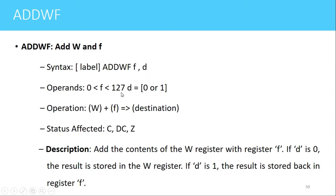The operands here are: F can be any value between 0 to 127, and D can be either 0 or 1. The operation performed is that the contents of W will be added with the contents of the file register and the result will be stored in the destination register. The flags that are affected are C (carry flag), DC (digit carry flag), and Z (zero flag).